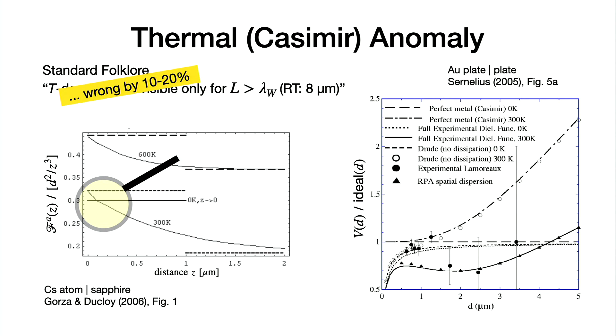This is the Casimir-Polder shift multiplied by z to the 3, so all these power laws become constants. For example, here the zero Kelvin power law is this one. This is the power law that you can compute for 300 Kelvin, but the actual calculation fairly rapidly deviates. If you ask for 10% in relative variation, you can see it at 0.1 micrometers, which is very far below the Wien wavelength of 8 micron. The long distance law which is given by this temperature dependent term is already reached for 1 or 2 micrometers.